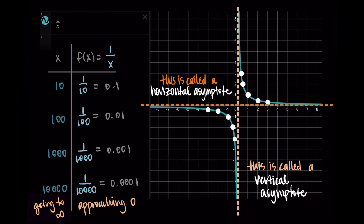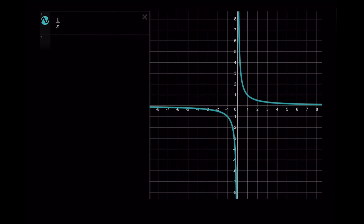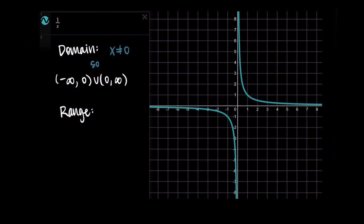So we have horizontal asymptotes and vertical asymptotes as characteristics of rational functions. For the domain of 1 over x, we exclude x equals 0, giving negative infinity to 0 unioned with 0 to infinity. For the range, looking at the graph, there is no output value of 0. So we exclude y equals 0, giving a range of negative infinity to 0 unioned with 0 to infinity.